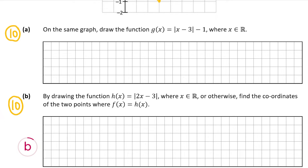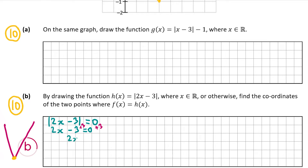To draw h of x, I'm going to find the point at the bottom where it hits the x-axis. All graphs that are the absolute value of something will have a V shape, so I need to find the bottom vertex on the x-axis. At that point the function equals 0, so I set the absolute value of 2x minus 3 equal to 0. This gives 2x minus 3 equals 0, so adding 3 to both sides gives 2x equals 3, and dividing by 2 gives x equals 3 over 2. The vertex coordinate is (3/2, 0).